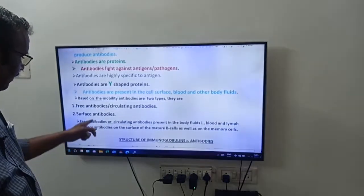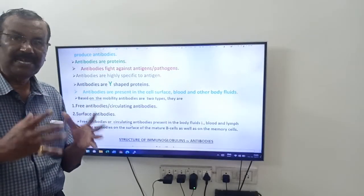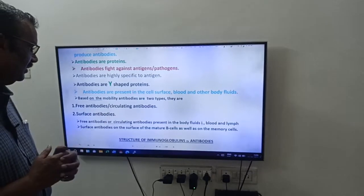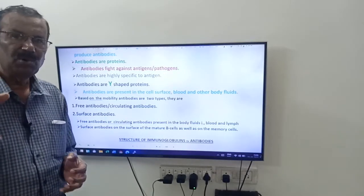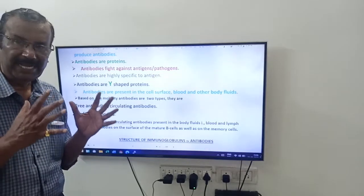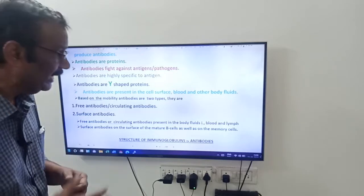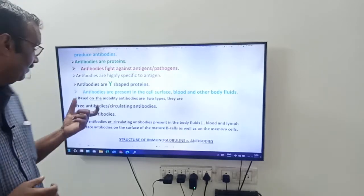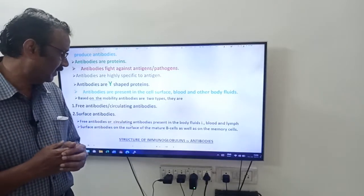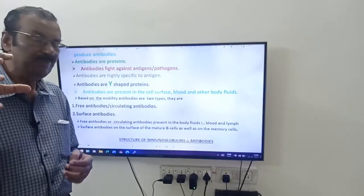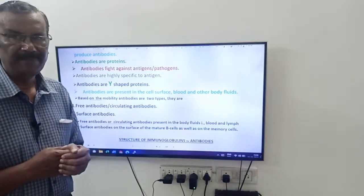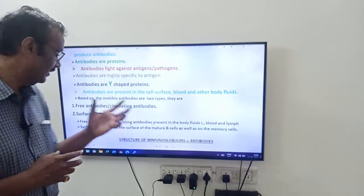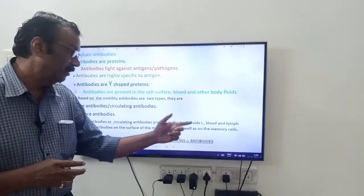The second type is surface antibodies — antibodies present on the cell surfaces or cell membranes. Free antibodies or circulating antibodies are present in body fluids like blood and lymph. Surface antibodies are present on the surface of mature B cells as well as on the memory B cells.